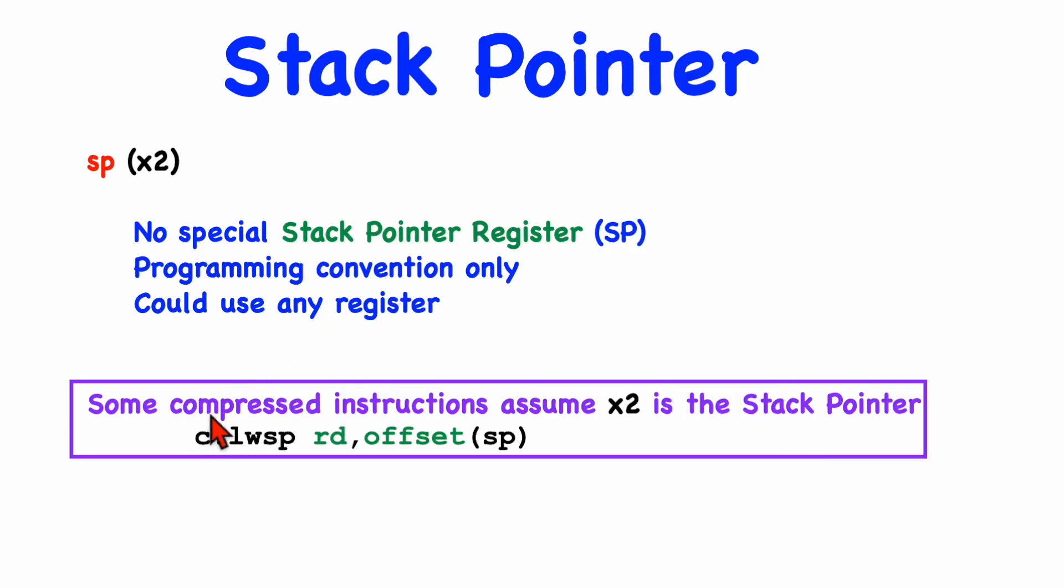Now, I do want to mention that for the compressed instruction sets, there are some of the instructions that assume that X2 is going to be used as a stack pointer, and here's an example. It loads a word, and the instruction has a field for the destination register and an offset from the stack, but the fact that X2 is used is implicit in the instruction. So, we're going to be focusing just on the full-size instructions, and so, X2 will always be used by the programmer for pointing to a stack, but that's by convention only.